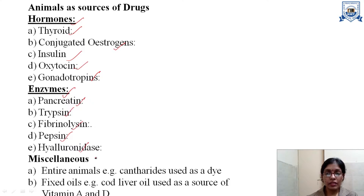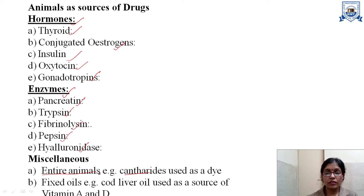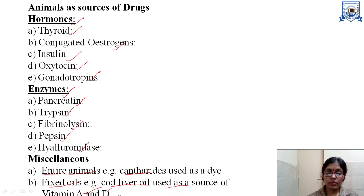There are also miscellaneous products obtained from animal sources. For example, the dye obtained from cantharides — the entire insect is dried and then the dye is prepared from it. Some fixed oils are also obtained from animals, like cod liver oil, which is used as a source of vitamin A and vitamin D.